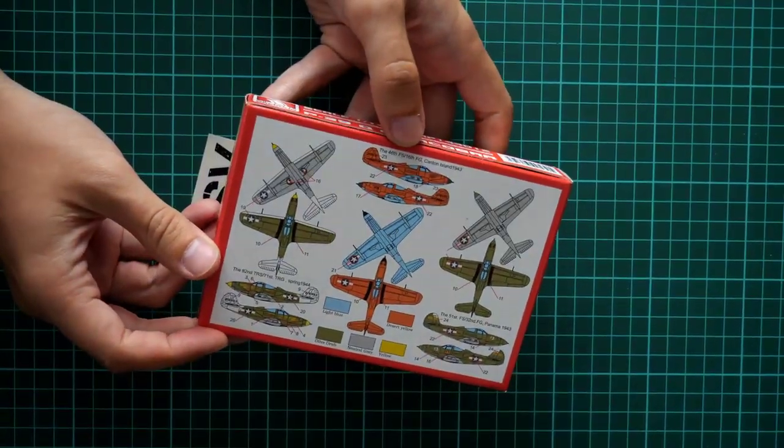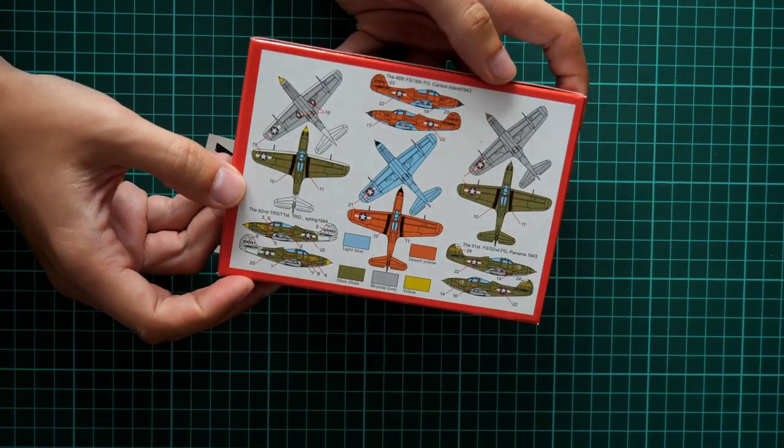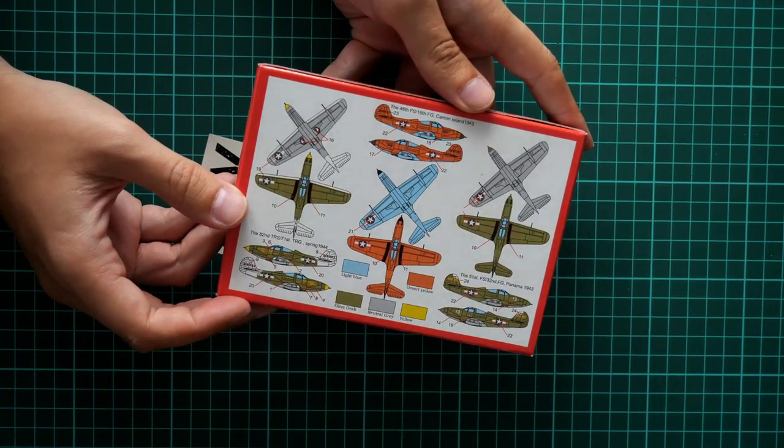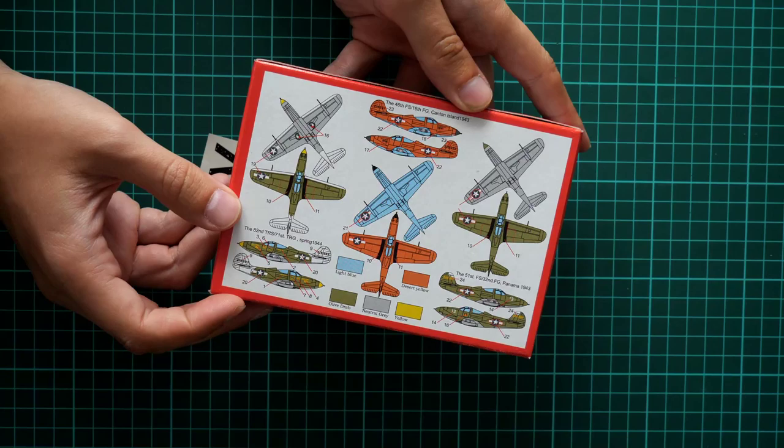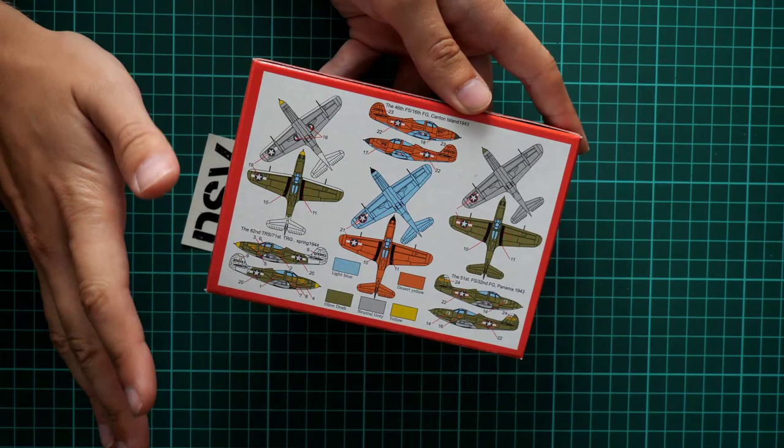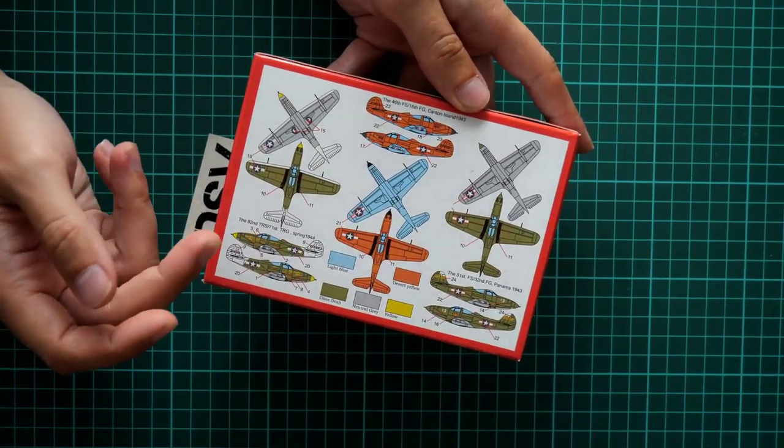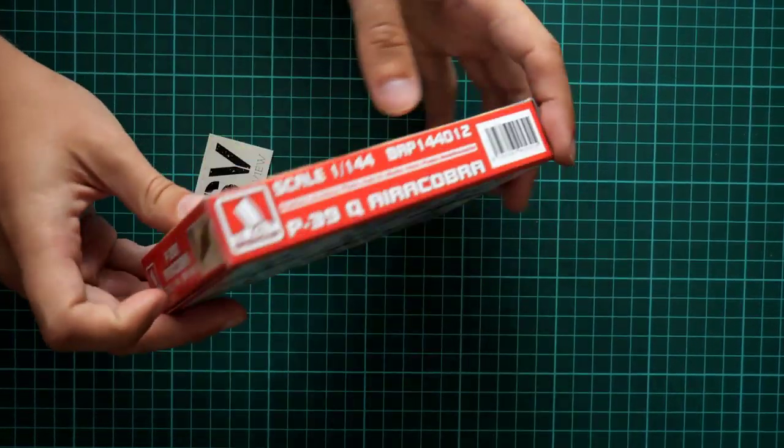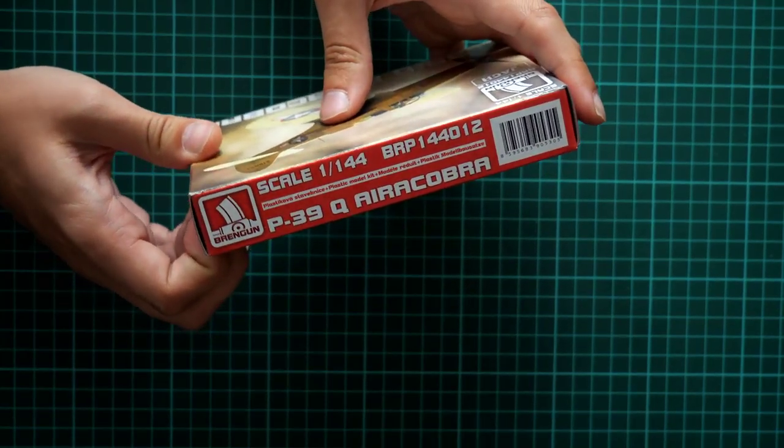Then on the rear side we have a marking guide for this aircraft. As you can see, there are three marking options included in this kit, and all of them are quite interesting, especially this orange aircraft. It will be up to you which one you choose, but as far as I remember, Brengun has quite nice decals, so it's also not an issue.